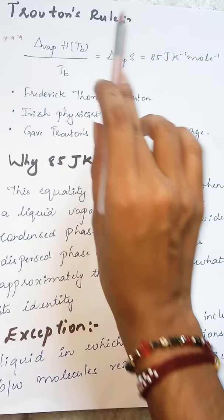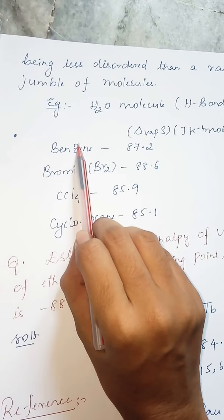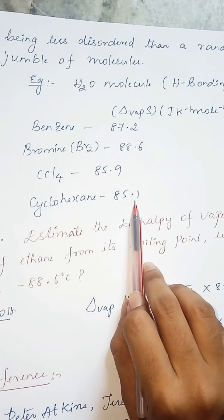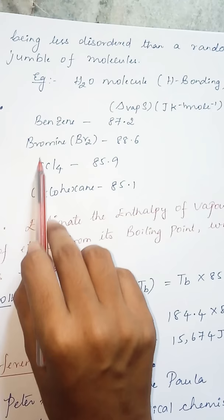Here are some literature values: for benzene we have found that it's 87.2, for bromine it's 88.6, for CCl4 it's 85.9, for cyclohexane it is 85.1. So you can see that the values are almost close to 85 for all the liquids in which there are no other interactions present.